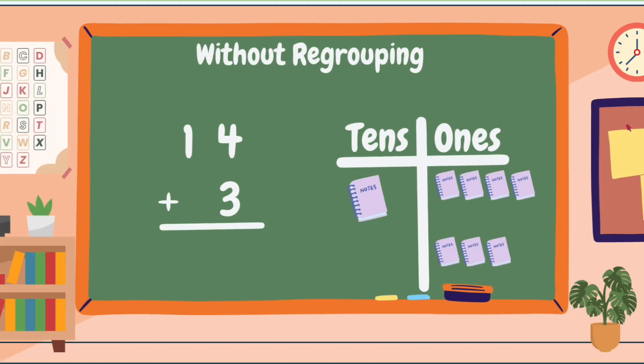All right. Let's proceed to learning adding without regrouping. Adding without regrouping is somewhat simpler than adding with regrouping. For example, 14 plus 3. We are still going to use the long method of addition to align the ones digits and the tens digits. As you can see in our tens column, we have one notebook, and in our ones column we have 4 notebooks at the upper part and 3 notebooks at the lower part, because our ones are 4 and 3.